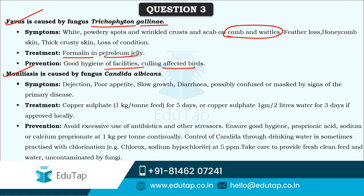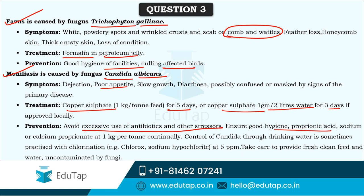Good hygiene facilities and culling affected birds can prevent the spread of favours. Moniliasis is caused by Candida albicans and symptoms include dejection, poor appetite, slow growth, and diarrhea. Sometimes symptoms can be masked by signs of various other primary diseases. Treatment involves copper sulfate at 1 kg per ton feed for 5 days, or copper sulfate 1 gram per 2 liters of water for 3 days. To prevent moniliasis, avoid excessive use of antibiotics and other stressors, as these can reduce the immunity of birds. Proper hygiene with propionic acid or sodium or calcium propionate at 1 kg per ton should be maintained. Continual control of Candida through drinking water is sometimes practiced with chlorination at 5 ppm.